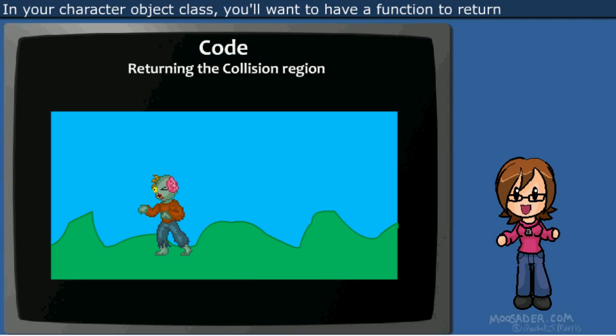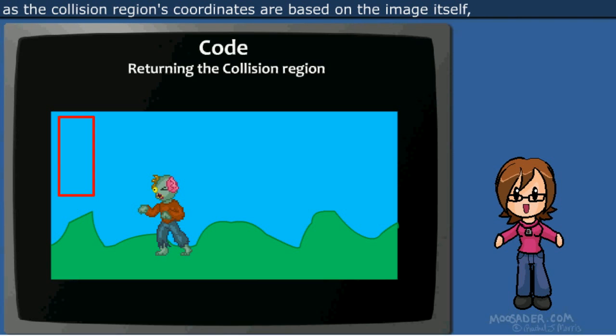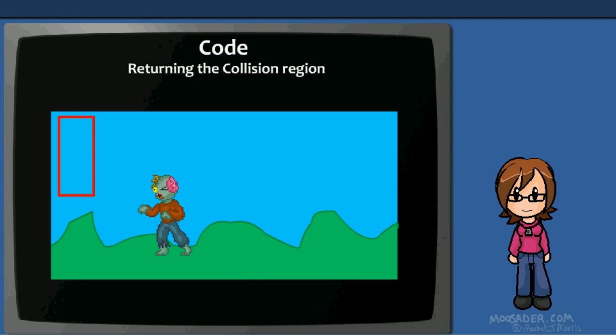In your character object class, you'll want to have a function to return the object's collision region with respect to where the object currently is on the screen. If you just returned the collision region itself, you'd get the incorrect values, as the collision region's coordinates are based on the image itself and not where the character is on the screen at that point.